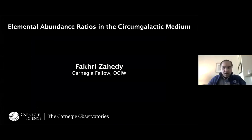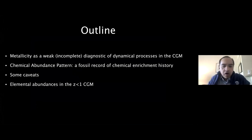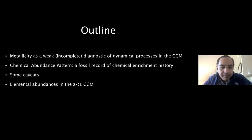Thanks everyone. This has been a very exciting six and a half weeks and we are in the home stretch now, so it will be very interesting to see how this workshop ends. Today, I would like to start with an illustration of why gas metallicity provides us with only a weak diagnostic of gas flows in the CGM — it's useful, but at the same time incomplete. I'll then demonstrate that elemental abundance ratios can actually give us a fossil record of the chemical enrichment history, and for that reason, they can help us resolve the physical origin of the gas that we see in the CGM. I'll go over some caveats, and finally show you some examples to convince you that this is a measurement that is not only possible but also doable right now.